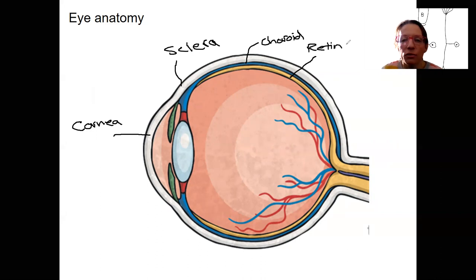This is where photoreceptors are located, as well as other layers of cells that are going to allow for phototransduction and then processing, initial processing actually happens in the eye. So this will be the focus of lecture of the retina.